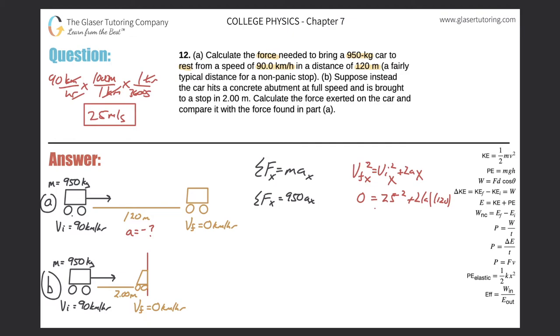I'm going to bring 25 squared over to that side. This is negative 625. Two times 120 is going to be 240. Divide both sides by 240, and here we're going to have our acceleration value.